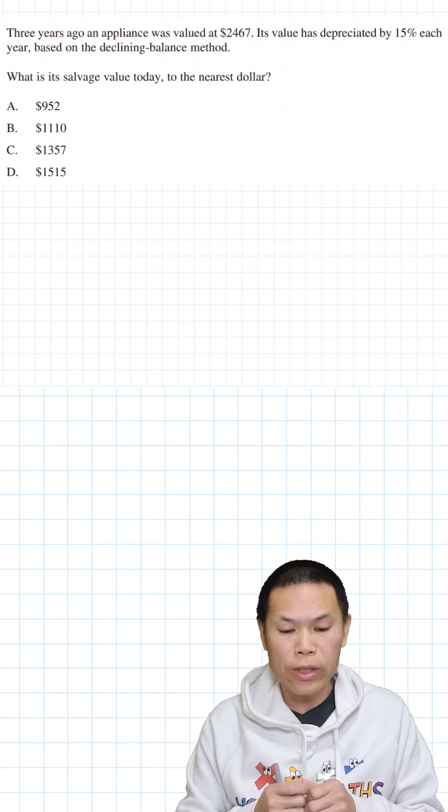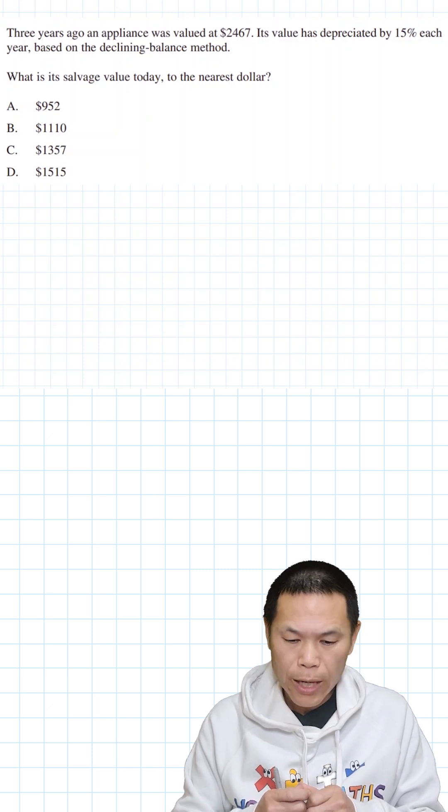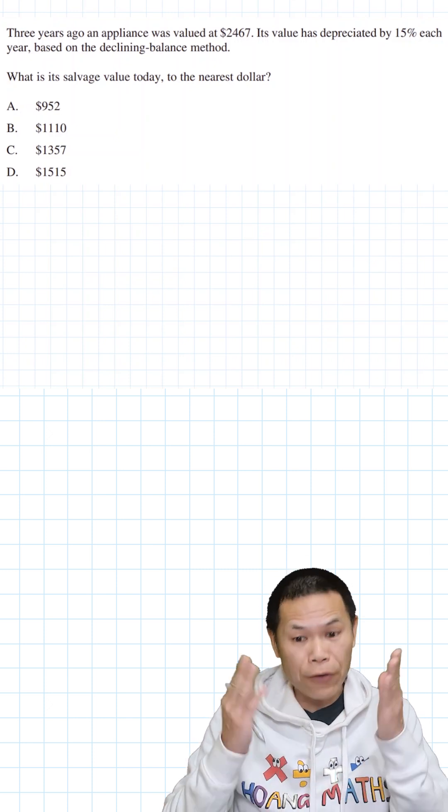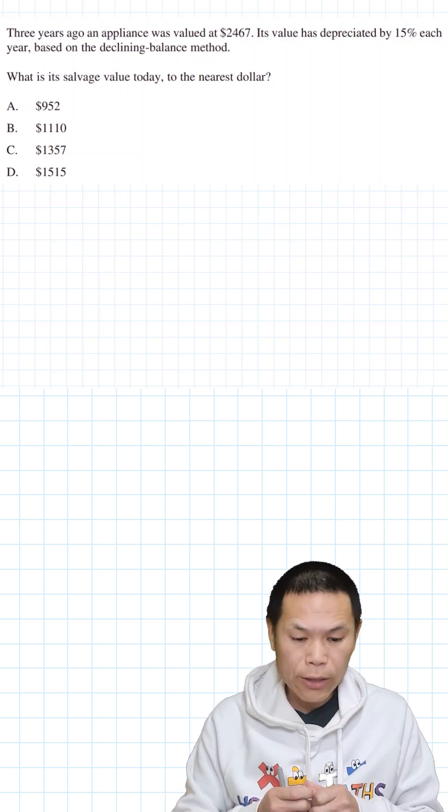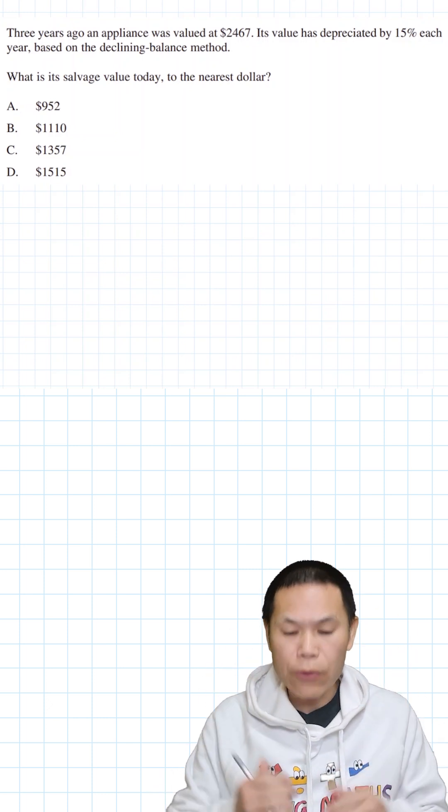Three years ago an appliance was valued at $2,467. Its value had depreciated 15% each year based on the declining balance method. What is its salvage value today to the nearest dollar?